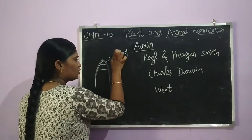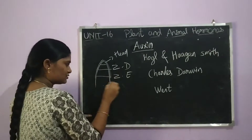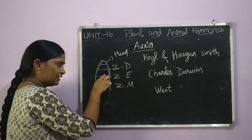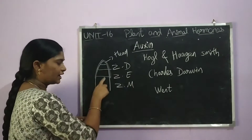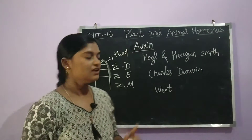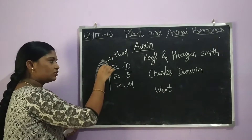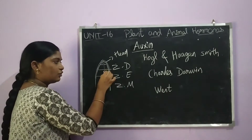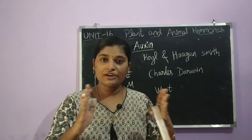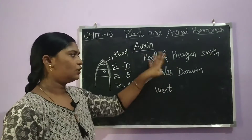In the root region there is a zone of cell division, then the zone of cell elongation, and then the zone of maturation. Auxin is responsible for the elongation of the stem — it is the main reason for stem elongation.